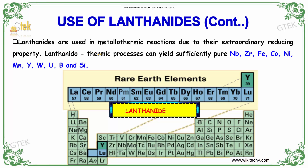Lanthanides are used in metallothermic reactions due to their extraordinary reducing properties. Lanthanide thermic processes can yield sufficiently pure Nb, Zr, Fe, Co, Ni, Mn, Yttrium, W, Uranium, Boron, and Silicon.